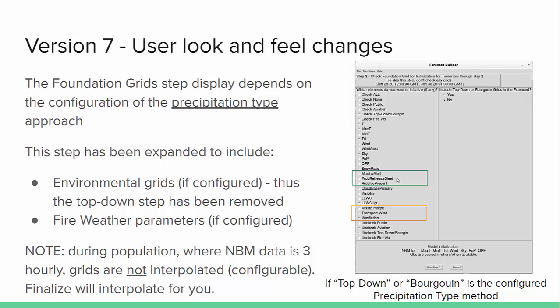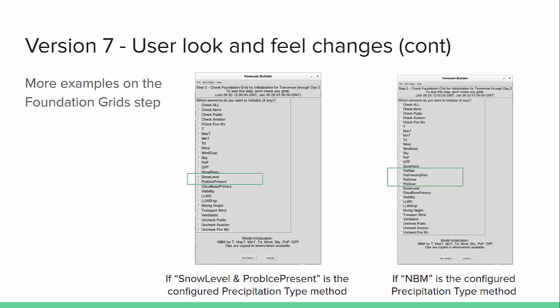You can have it interpolate, but whether you do or not, it should be noted that Finalize will interpolate for you. If we look at the foundation grids step switching to snow level and prob ice present as a configured P-type method, you see the menu is a little shorter for the GUI with just the two parameters. And then if you switch and use MBM as the precipitation type method, you see the four probabilities of type — rain, freezing rain, snow, and sleet — depicted in the GUI.